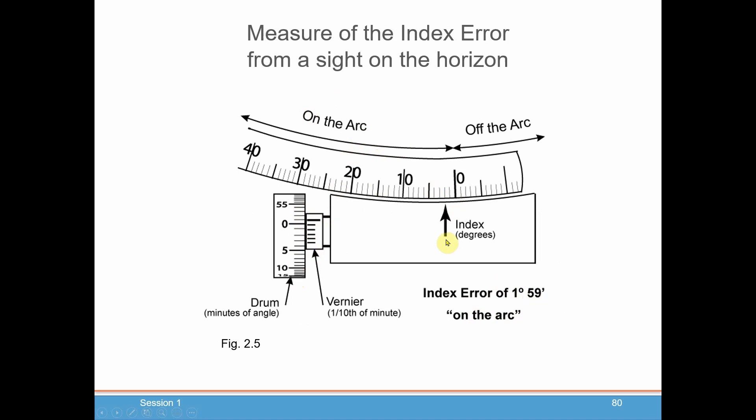Now, why is that important? Because depending on whether the angle is on the arc, the index error on the arc or off the arc will tell you whether you should be adding or subtracting that index error off of your sextant reading. So the way it's remembered, if it's on the arc, you take it off. If it's off the arc, you put it on. So in this case, it's on the arc of one degree, 59 minutes. So you will be subtracting that angle from your sextant reading.